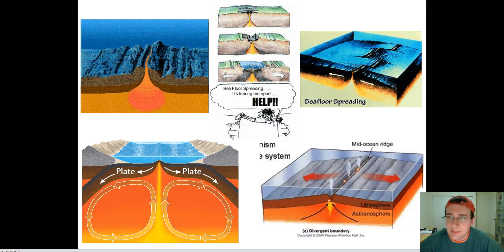We started finding things like seamounts, guyots, and the mid-ocean ridge in the middle of the ocean. As soon as people realized there was this mid-ocean ridge, questions were raised about what it was and its role in Earth's system. Oceanography research became the geological evidence that ended up proving Wegener's continental drift theory.